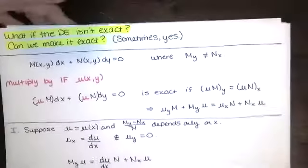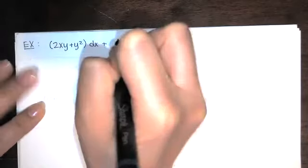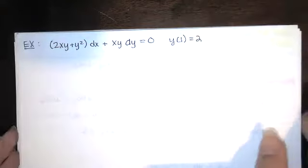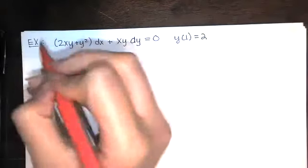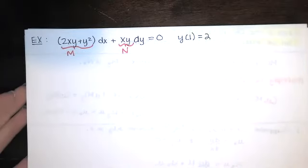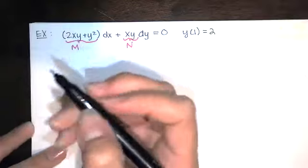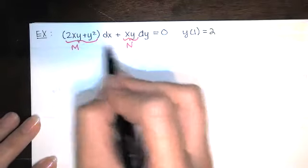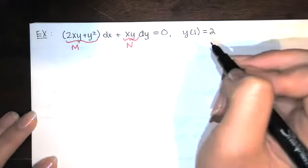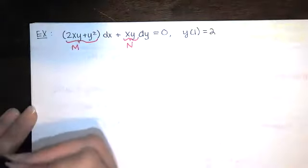Let's see how this works with an actual example. Suppose we have (2xy + y²) dx + xy dy = 0 with initial condition y(1) = 2. Here M = 2xy + y² and N = xy. We check exactness by taking partials: ∂M/∂y and ∂N/∂x.